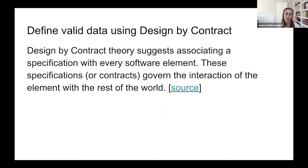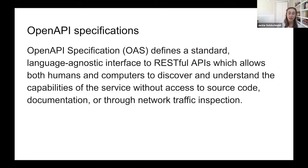Before you can reasonably validate data in your pipelines, you need to define what valid data actually is. A concept that can be very helpful for this is Design by Contract, which is basically a theory that says when we build a software element, a crucial part is figuring out how that software interacts with the world around it — what inputs it accepts and what outputs it will return. For this, you can use the Open API Specification to define what your service expects as valid data at each step of the pipeline and what it will return.